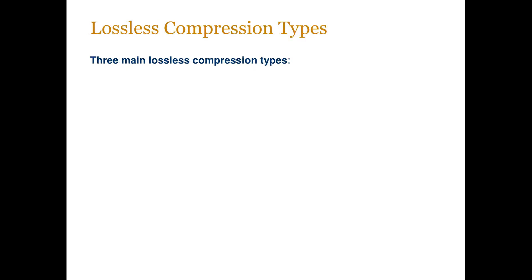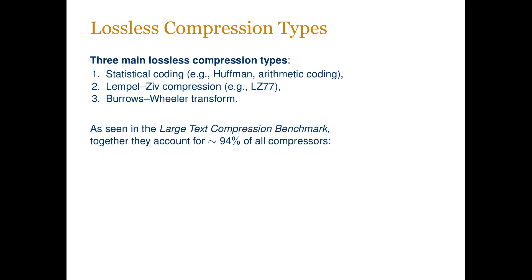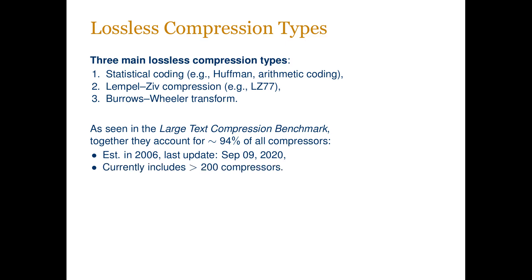The three main lossless compression types are: statistical coding, which includes for example Huffman and arithmetic coding; Lempel-Ziv compression, which includes the LZ77 algorithm; and Burrows-Wheeler Transform, or simply BWT. As seen in the Large Text Compression Benchmark, these three methods together account for around 94% of all compressors. The Large Text Compression Benchmark is a comprehensive list and benchmark of lossless compressors; the website was created in 2006 and is regularly updated, currently including over 200 compressors.